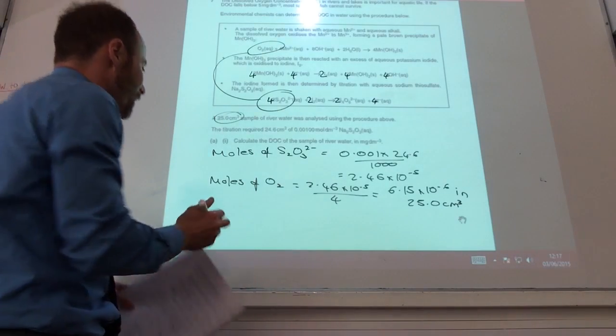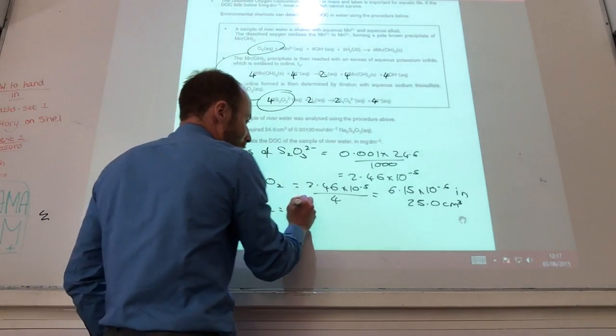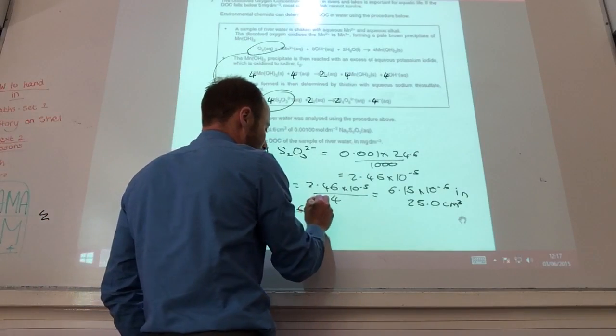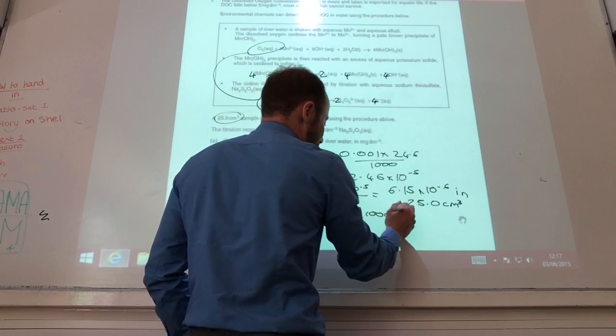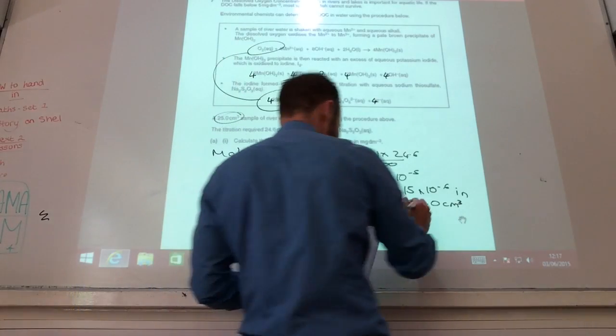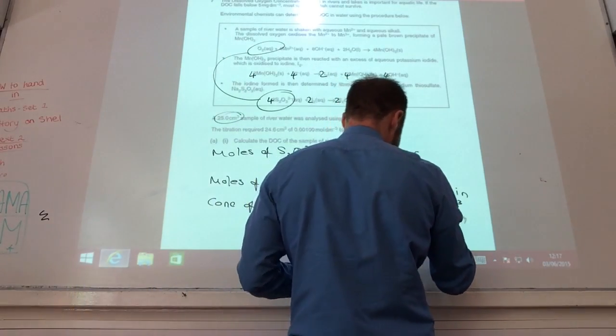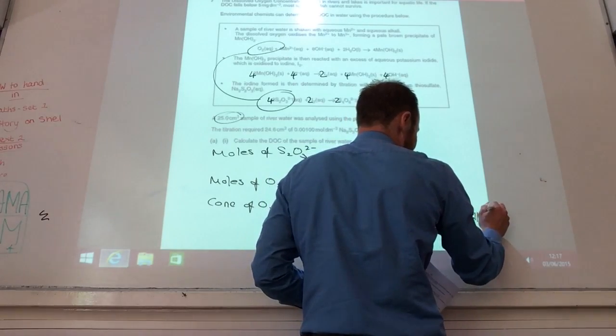Right, so I now need to work out my concentration of O₂, which is 6.15 times 10 to the minus 6 divided by 25 times by 1000, which gives me 2.46 times 10 to the minus 4. That's moles per decimeter cubed.